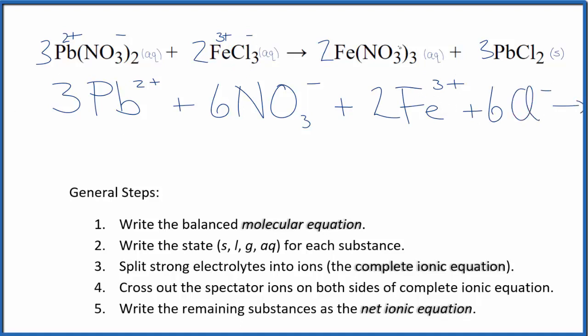For the products, we have the nitrates, 3 of them. So each one's 1 minus. The iron will be 3 plus. 2 Fe 3+ ions, just like the reactants. And then we'll have 2 times 3, 6 nitrate ions, NO3-.